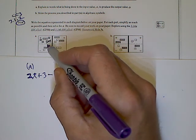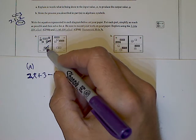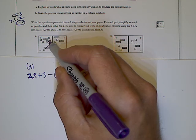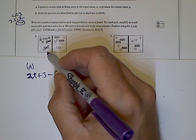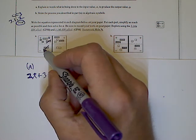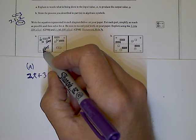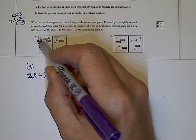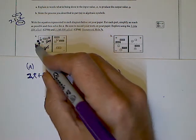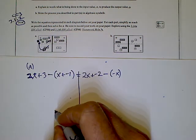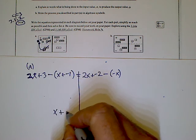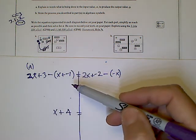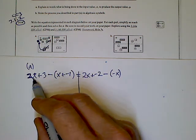Looking at each side with the tiles: I can cross out the two x's that appear top and bottom, because x minus x cancels. Then I take the unshaded tile — which is a negative — and bring it to the top, where it becomes a positive. So the left side simplifies to x plus four.